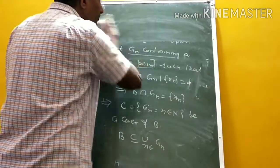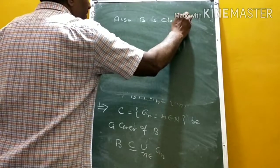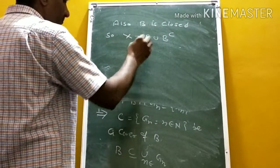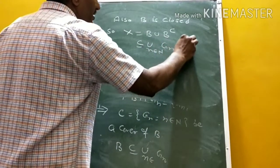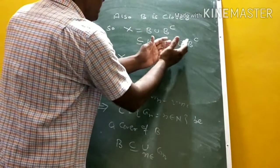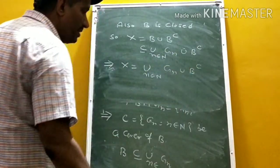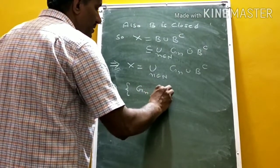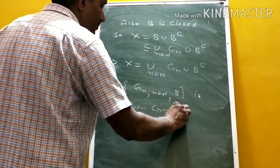Also, B is closed. So X can be written as B ∪ B^c. Since B is contained in ∪_{n ∈ ℕ} G_n, we can write X = ∪_{n ∈ ℕ} G_n ∪ B^c. This implies {G_n : n ∈ ℕ} together with B^c is a countable open cover of X.